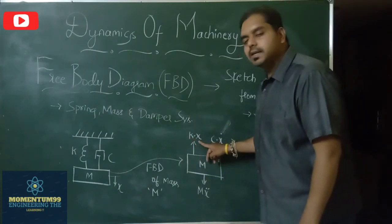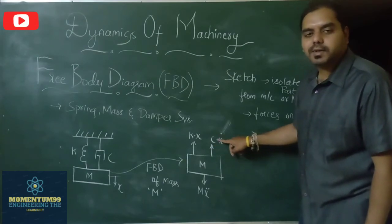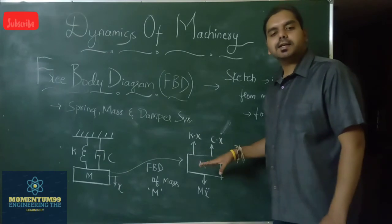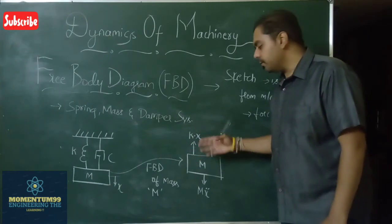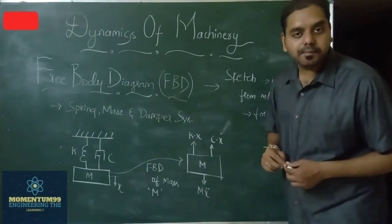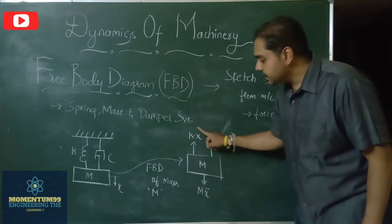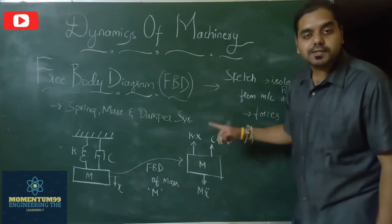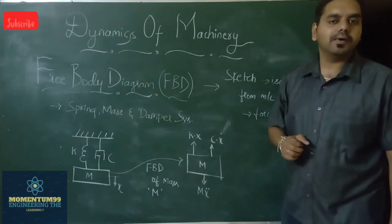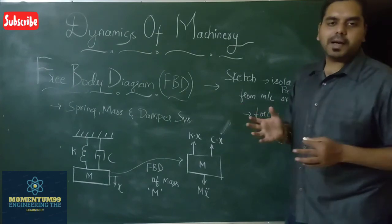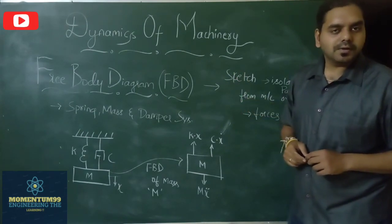K times X is the force acting on the mass in the direction opposite to the gravitational force, and C times X-dot is the damping force also acting opposite to gravity. The spring and damping forces act in one direction while the gravitational force acts in the opposite direction. By isolating the mass and representing the spring, damper, and gravitational forces on it, we have a clear idea of all the forces acting on the mass — that is the basic use of free body diagrams, which will be better understood when solving problems in future classes.